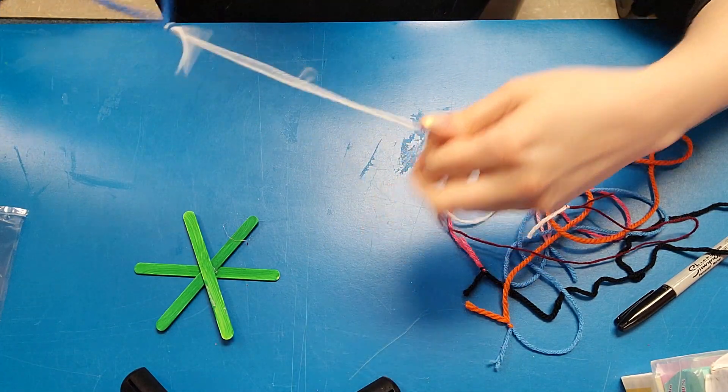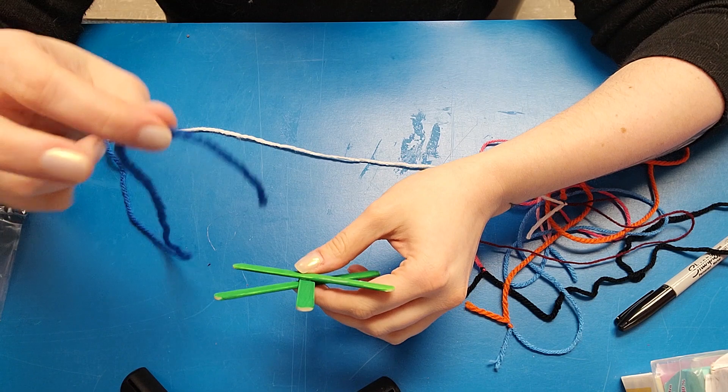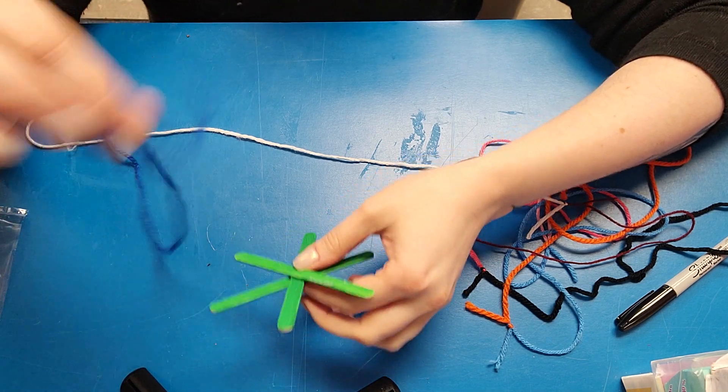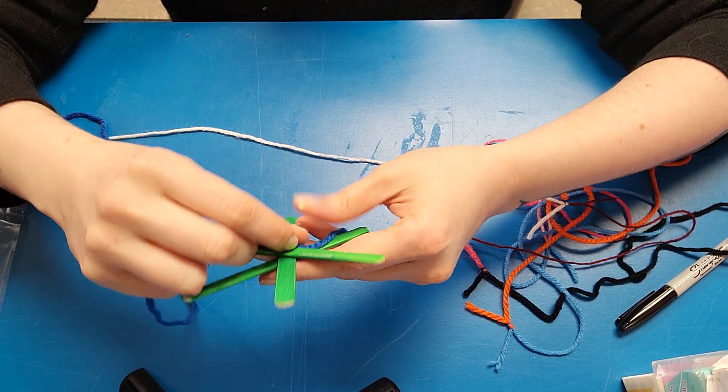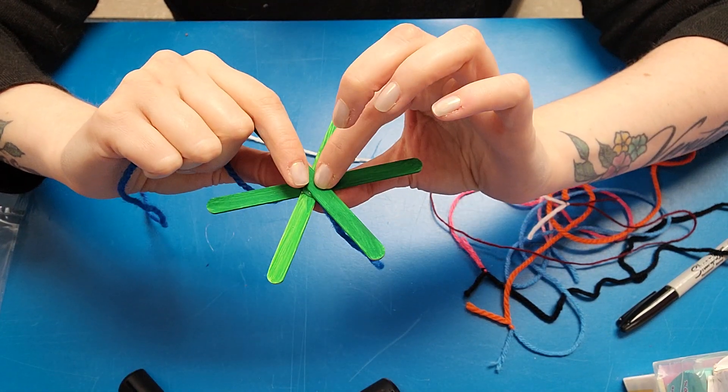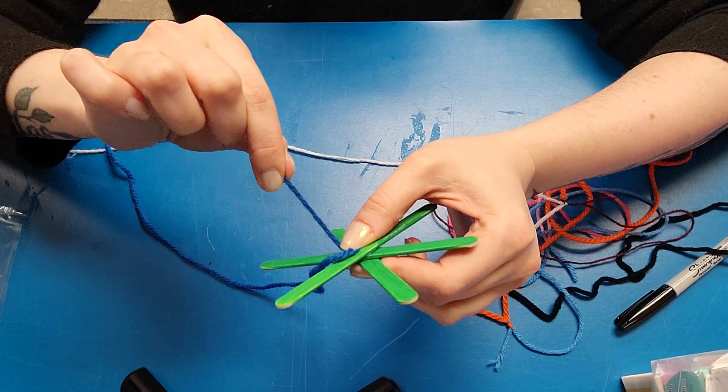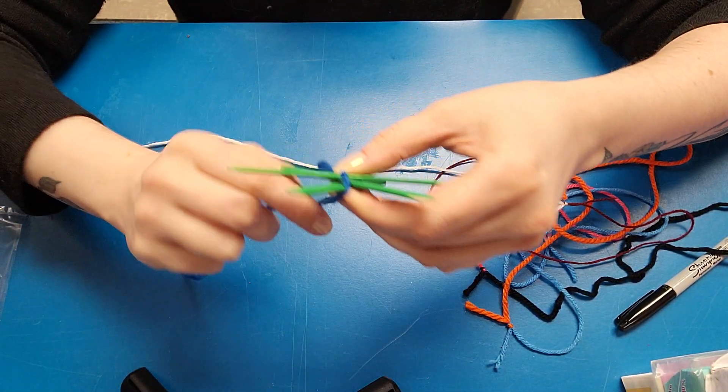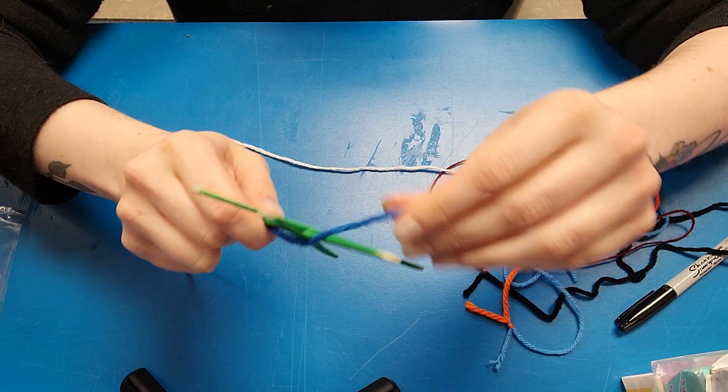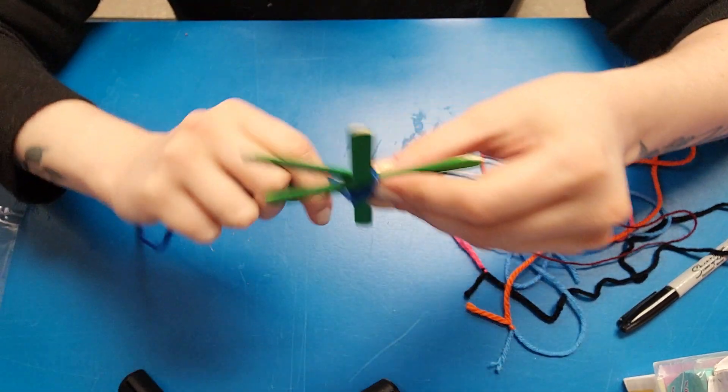Okay. Once it's all together, you're going to take one end of your very long yarn and start wrapping around the middle where all three popsicle sticks converge. And you want to leave yourself a little bit of an end here so that you can knot the yarn off at the end to hold it all together.